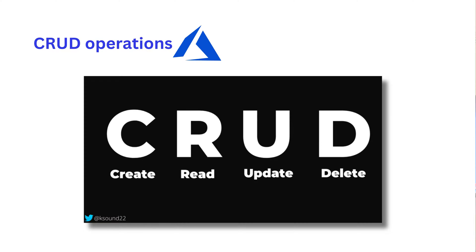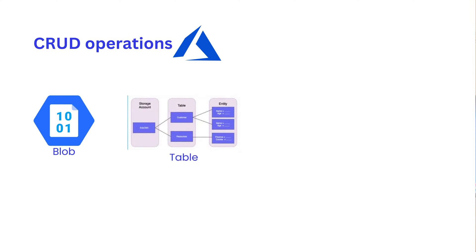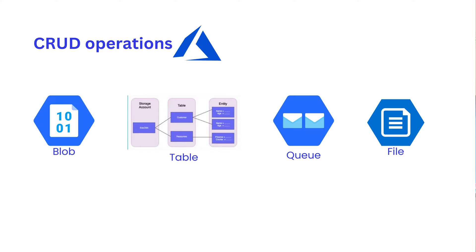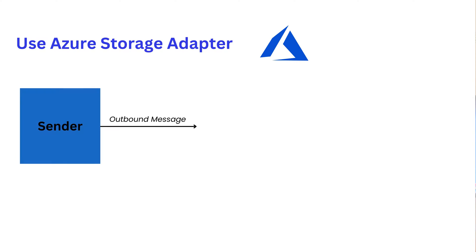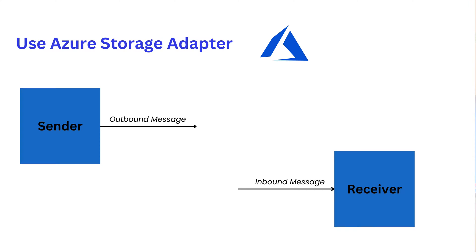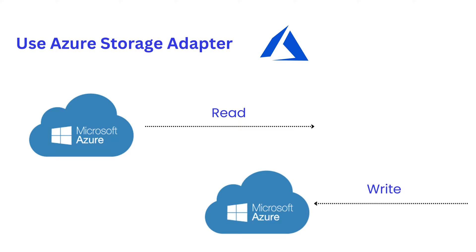In Microsoft Azure, we have blob storage, table storage, and queue storage. You can manipulate these services by using this Azure Storage Adapter. You can use it both on the sender side and on the receiver side, which means you can read data from Microsoft Azure cloud and write data to Microsoft Azure cloud.